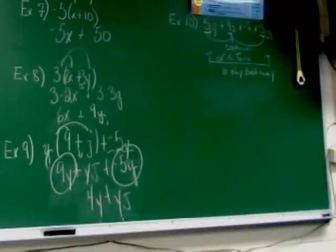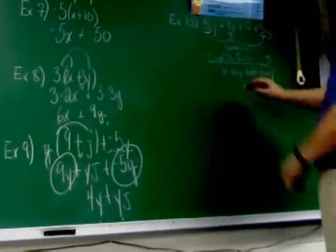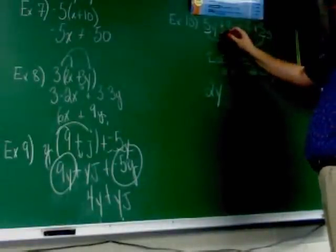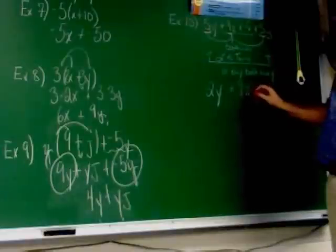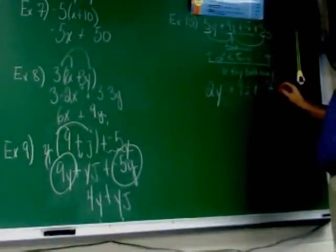That's all like terms. So if I was going to simplify this problem, notice no distributive property here. I'm not trying to trick you. No distributive property. 5Y and negative 3Y would make 2Y. And then the rest of this I can't do anything with. So this is going to be plus 9Z plus negative 7.